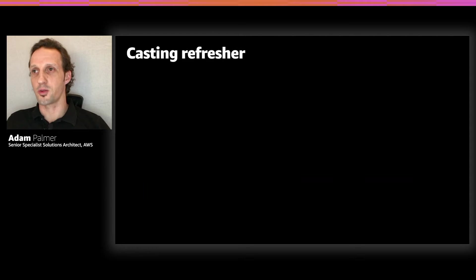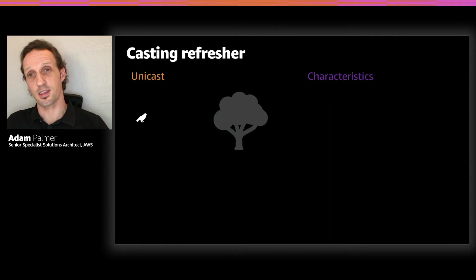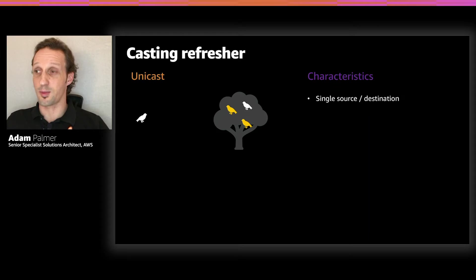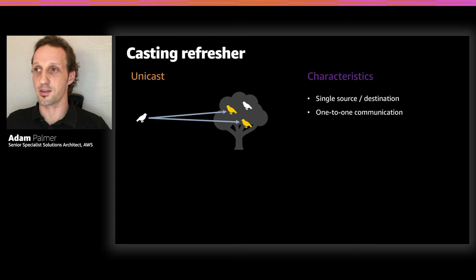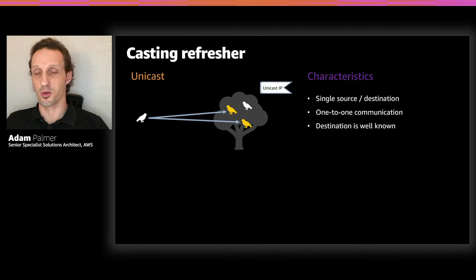So what exactly are multicast communications? To explain that, let's introduce another common form of communication — unicast — look at some of its characteristics, and then contrast the two. Unicast communications are everywhere. Most commonly, when two devices speak to each other, they do so using a unicast methodology. Characteristics here are typically a single source and a single destination, and the communications are one-to-one. The source knows exactly who it's talking to, and addressing uses unicast IP addressing.